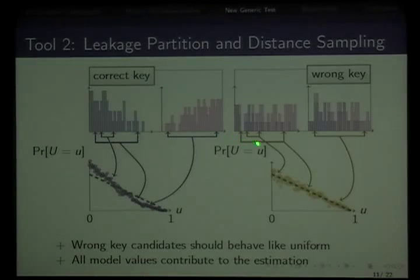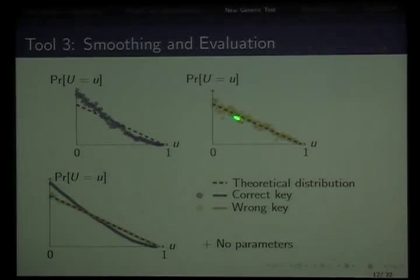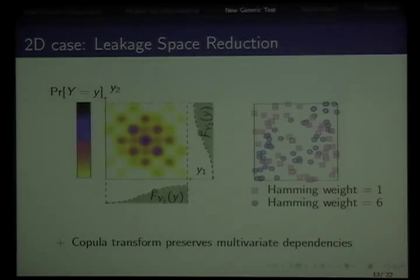We sample the distance between samples, and this should behave like uniform. You have a theoretical distribution on how uniform values behave. For wrong key hypotheses, they tend to behave this way. A nice thing compared to mutual information is that all samples contribute to this estimation, whereas for mutual information you need separate estimations depending on conditional distributions. This is just a problem of smoothing these densities and comparing them to look for the distribution furthest from the theoretical distribution. That one is your correct subkey. No parameters to be set here. It's quite straightforward.